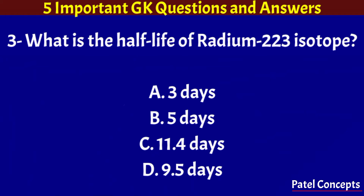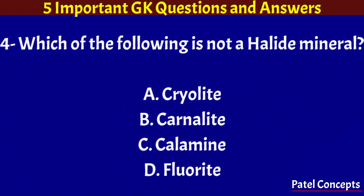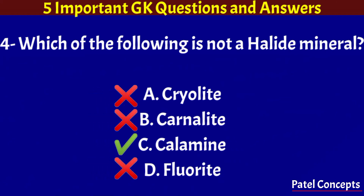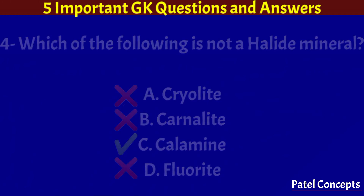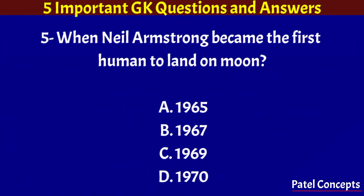What is the half-life of radium-223 isotope? 11.4 days. Which of the following is not a halide mineral? Calamine.